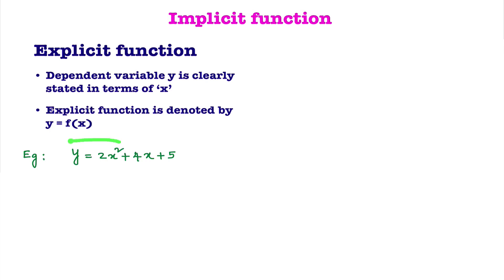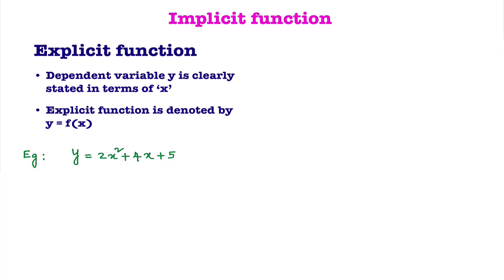So in this example, y is clearly stated in terms of x. In an explicit function, dependent variable y is clearly stated in terms of x.